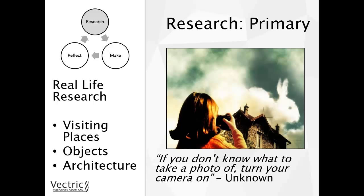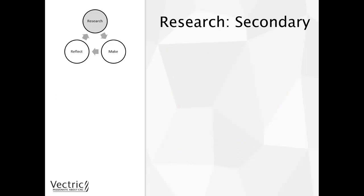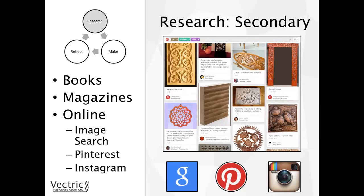Another way to research is secondary research — research that has already been written. That includes looking at books or magazines for inspiration. And of course there is online, where there is an absolute wealth of information available. One thing I tend to do on a day-to-day basis is use search engines and do image searches, where you put a term in and select the image search option and are shown lots of different images according to that search term. I find that helps me get inspiration — I save images to my computer to look at later.